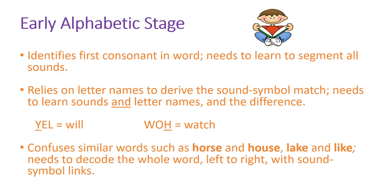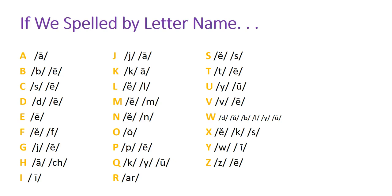Children in this stage will also confuse similar-looking words like horse and house, or lake and like. What they need to learn is decoding the entire word from left to right. If you think about spelling by letter name — if you look at the alphabet chart, you can see the sounds in each letter name. Looking at H, you can see exactly what we just talked about: a child would hear that CH sound when saying the letter name H and might choose to spell with that letter. And looking at Y, you can see WI is how you would phonetically spell the letter name Y — so we can understand why a child might make that error.